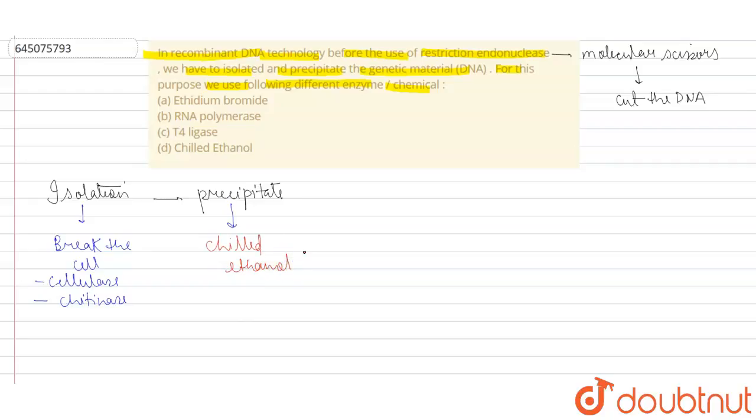After that, with the help of spooling, the chilled ethanol can be extracted. So chilled ethanol is basically used for the final isolation and precipitation of the DNA.